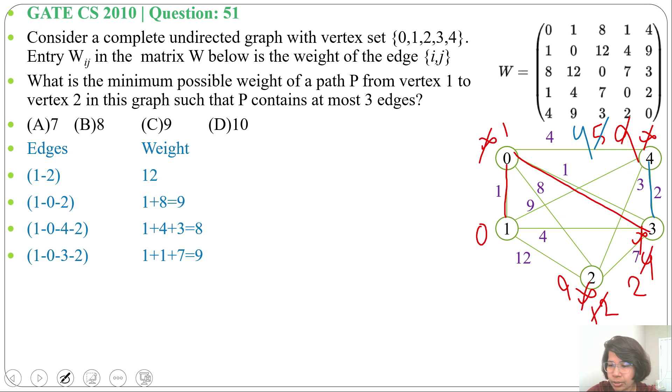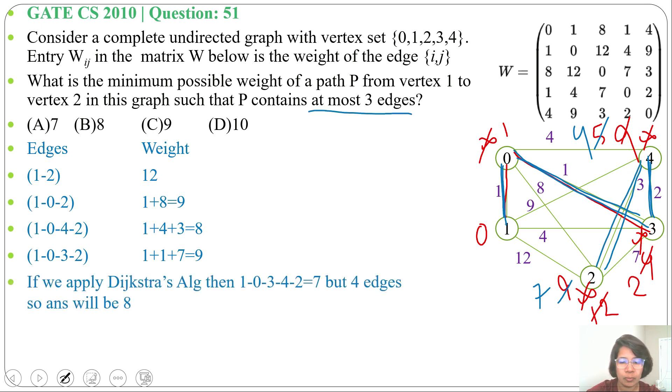Next we will update cost of 2. So 4 plus 3 it will be 7. So the path is 1 to 0, 0 to 3, then 3 to 4 and 4 to 2, but there are 4 edges. In question it's written at most 3 edges, so this cannot be the path. Here 7 is lowest, 7 is lower than 8, but as it is written at most 3 edges, this 7 can't be the answer. Answer will be 8.